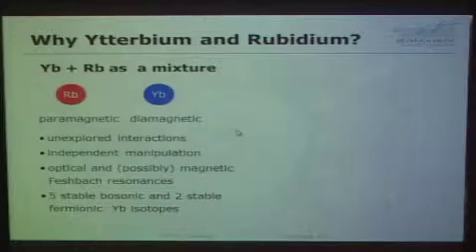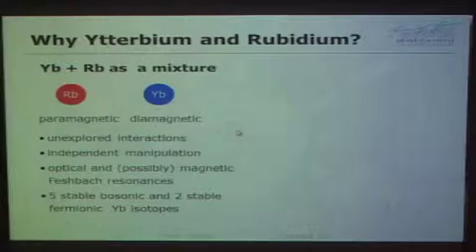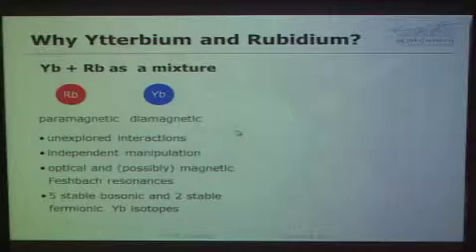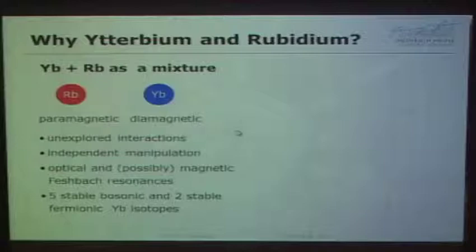The ytterbium-rubidium system is a mixture of a paramagnetic atom — namely rubidium — and a diamagnetic atom — namely ytterbium. Until the experiments I will show you today, the interactions between these two atoms were completely unexplored. The nice thing about having a paramagnetic and a diamagnetic atom is that you can easily independently manipulate the two species, getting around problems like gravitational sag. There should be optical Feshbach resonances and hopefully also magnetic Feshbach resonances.